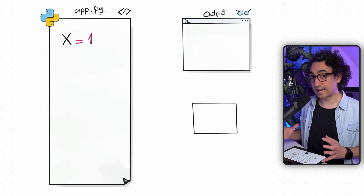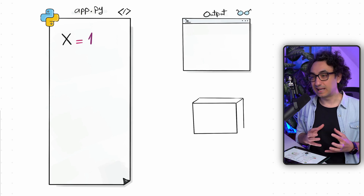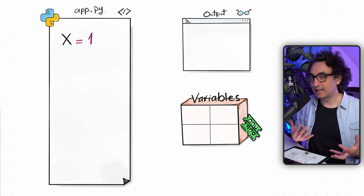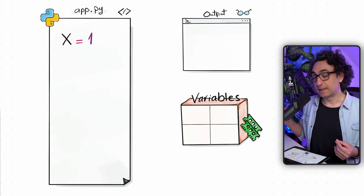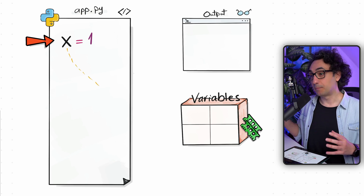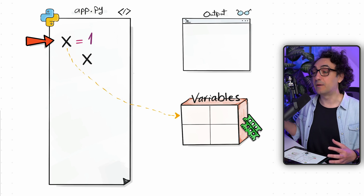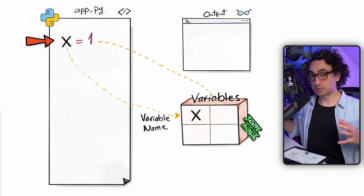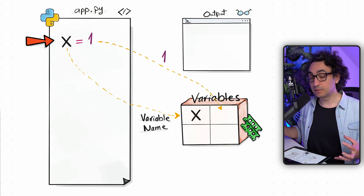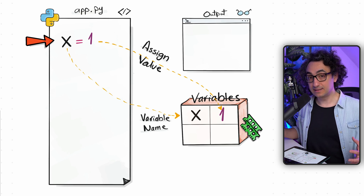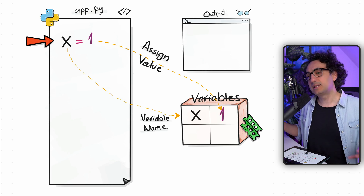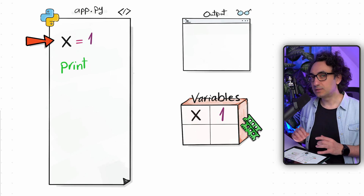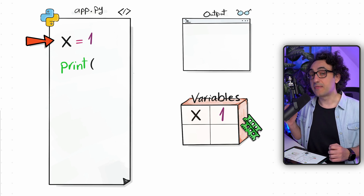Once we execute it, what's going to happen? Python is going to create a box called variables — this box can store values and data in the memory that is ready to be used whenever we want. So Python will create in the memory a variable called x and assign for it the value one. So far we have created a variable and assigned it a value. Now what is left is to use this variable — for example, with the print function, but inside the parentheses we will use the variable name, not a direct value.